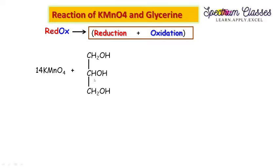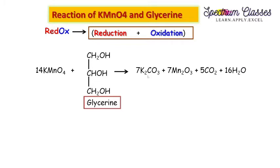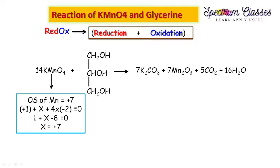Now I will show you the reaction of KMnO4 and glycerine. We have KMnO4 as one reactant and the glycerine molecule as the other. They react together to give many products. In KMnO4, manganese has an oxidation state of +7. Why do we consider only Mn? Because we measure the oxidation state of the central metal, and here Mn acts as the central metal.